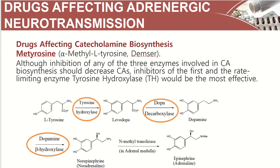Although inhibition of any of the three enzymes involved in catecholamine biosynthesis should decrease catecholamines, inhibitors of the first and rate-limiting enzyme, tyrosine hydroxylase, would be most effective. Recalling the biosynthesis of dopamine, norepinephrine, and epinephrine, there are four enzymes involved. The first step is the rate-limiting step, and if you inhibit that enzyme, you will slow down or even stop the process of making neurotransmitters.